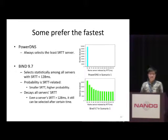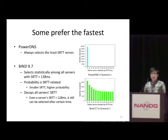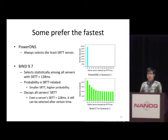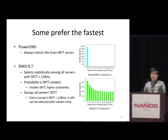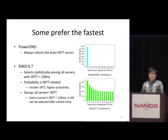Another cache resolver, BIND 9.7, also sends a lot of queries to the fastest name server, but it also distributes a lot of queries to the others. This is because BIND 9.7 distributes queries statistically: for name servers with a round-trip time less than 128 milliseconds, BIND 9.7 will select those with smaller round-trip time with higher probability. Even for name servers with round-trip time larger than 128 milliseconds, since BIND 9.7 also uses SRTT decay, this name server can still be selected after some time.